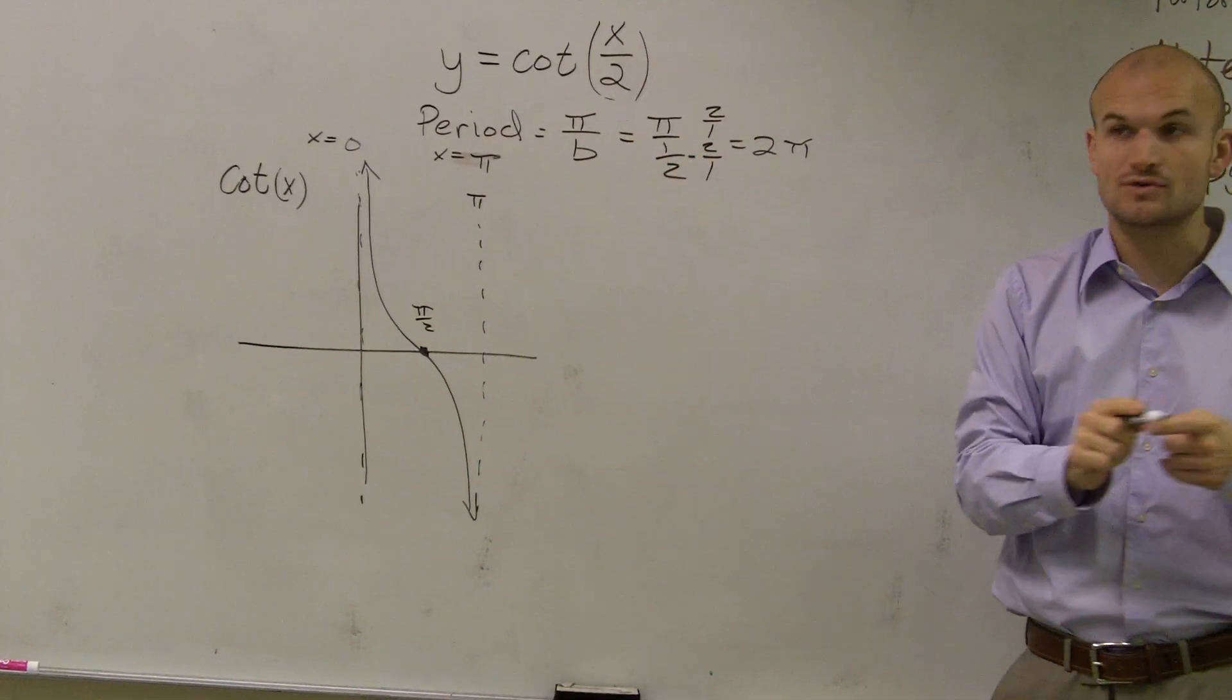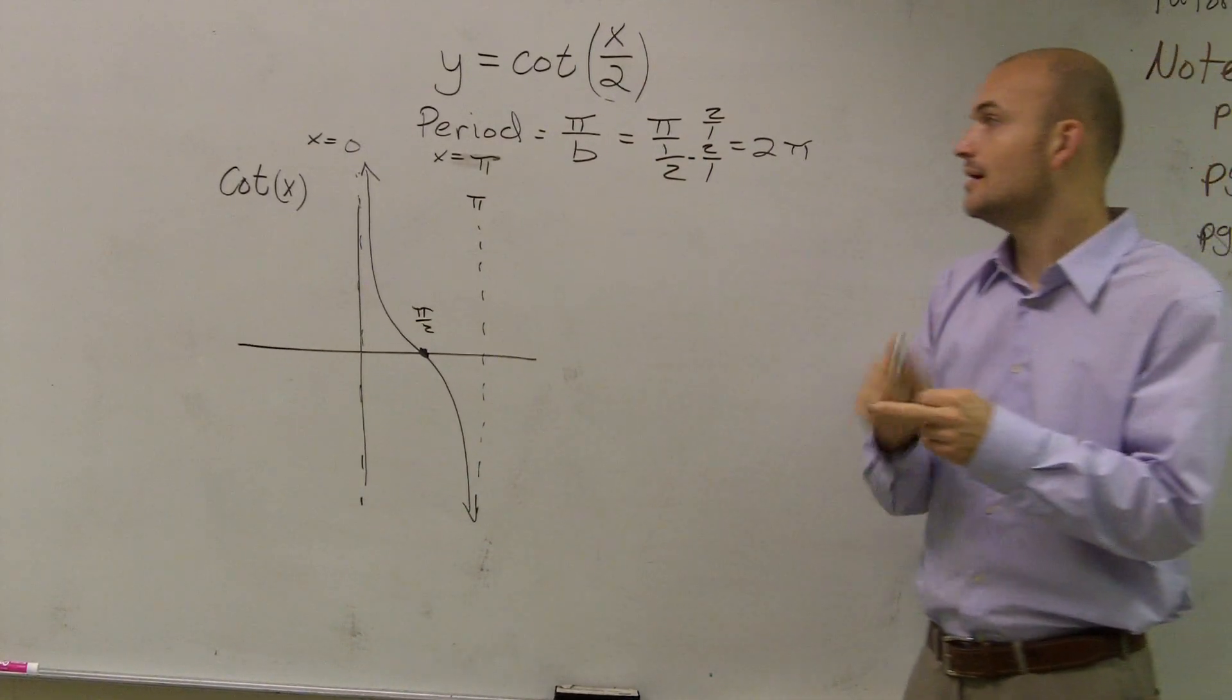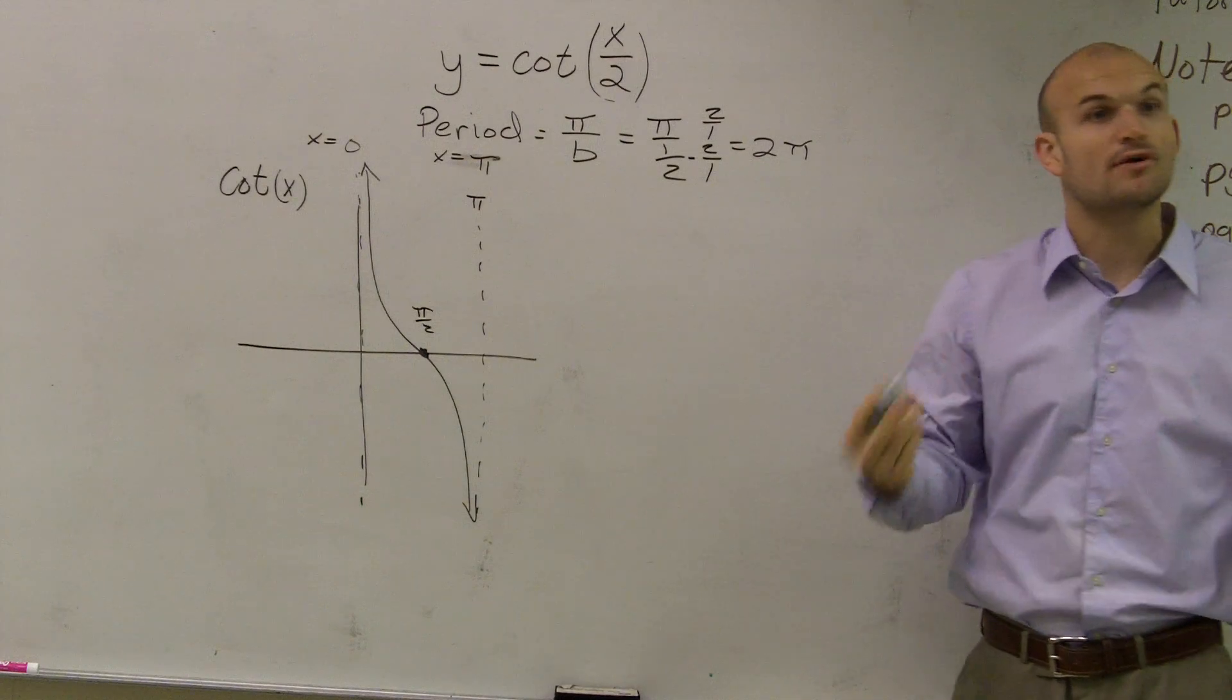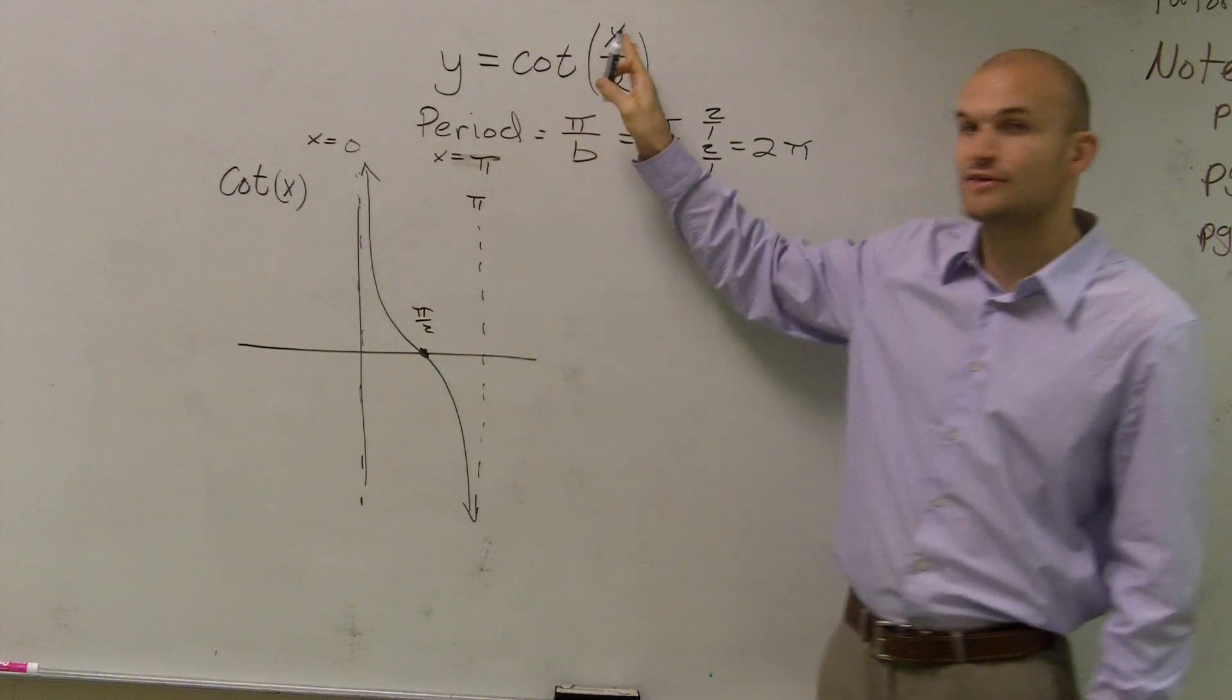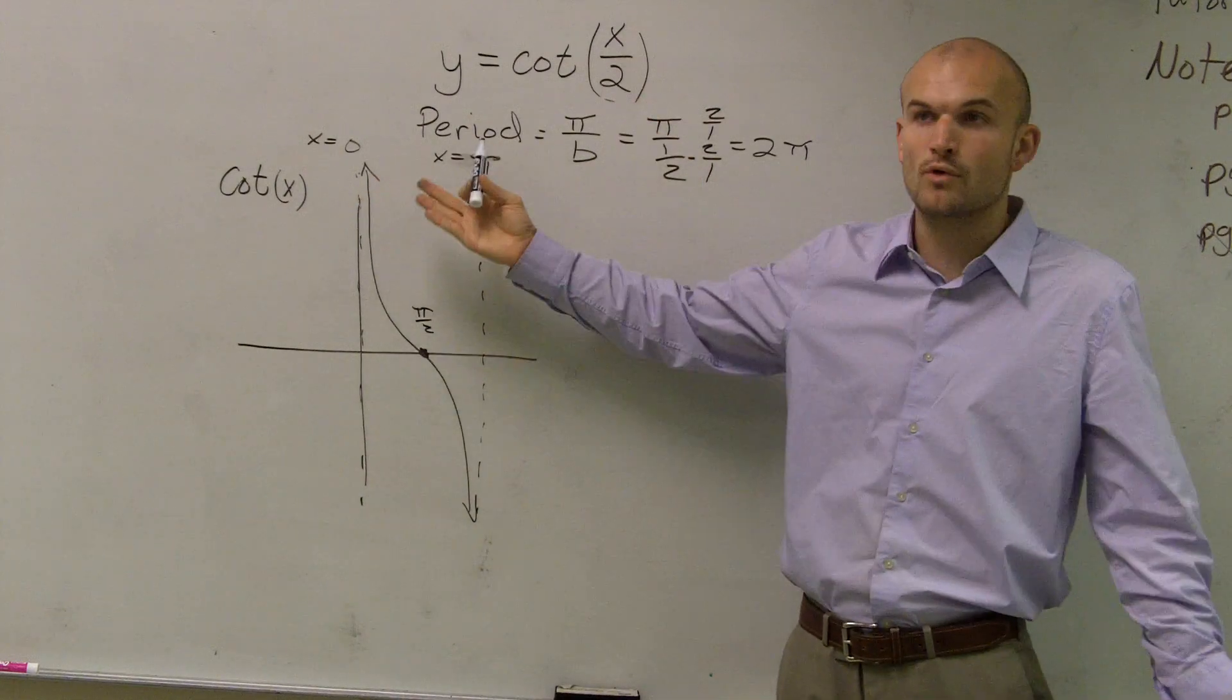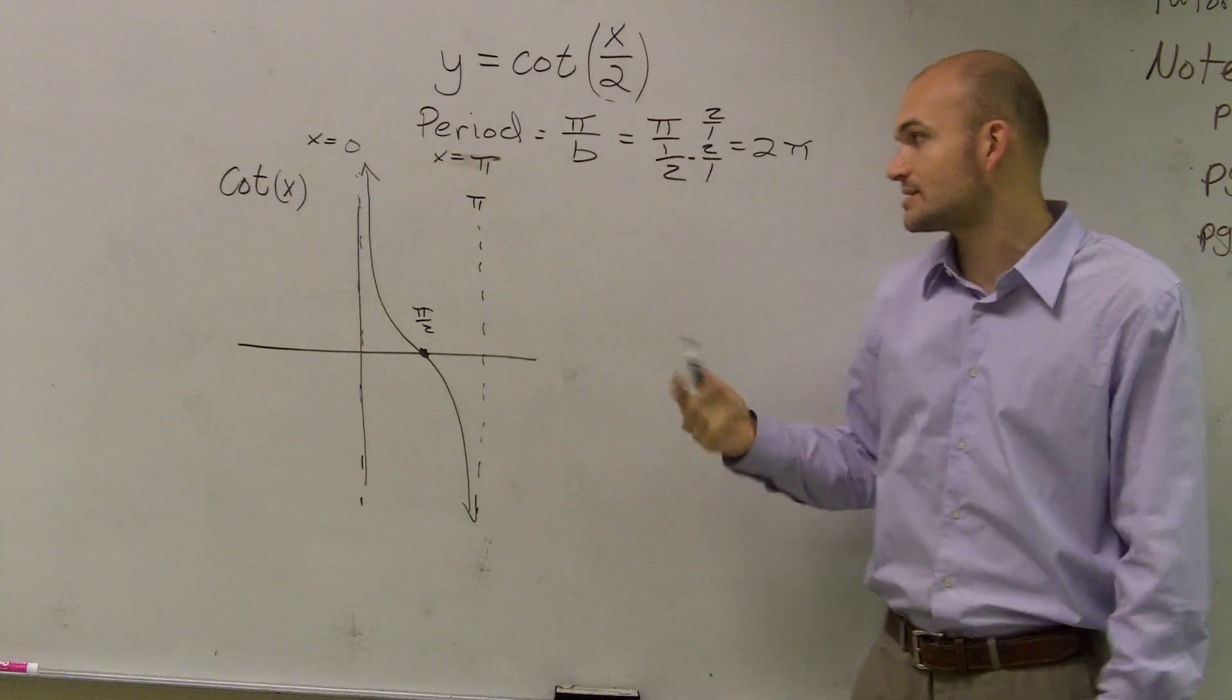So if there's any alterations that I take inside my function, this works for sine, cosine, tangent, cotangent, it works for all of them. What you do is you just take whatever's inside your function and set it equal to your two endpoints of one period, or your two asymptotes in this case.